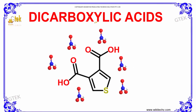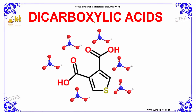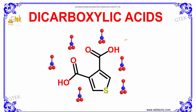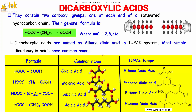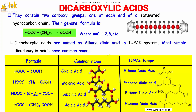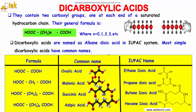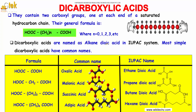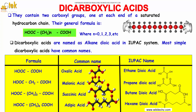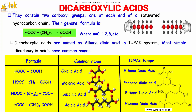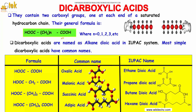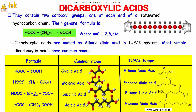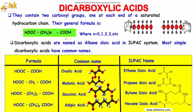Welcome to Gtech Technos Solutions Private Limited. In this unit we'll be discussing about dicarboxylic acids. Dicarboxylic acids contain two carboxyl groups, one at each end of a saturated hydrocarbon. The general formula is HOOC-(CH₂)n-COOH, where n can be any integer ranging from one, two, three and so on. Dicarboxylic acids are named as alkane dioic acid in the IUPAC system.